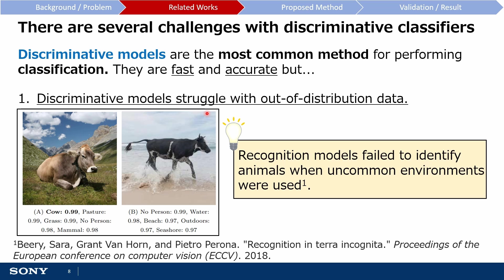Firstly, they appear to struggle with out-of-distribution data — that is, data that deviates significantly from the data used to train the model. For example, a paper published in ECCV 2018 looked at how the performance of convolutional neural networks changes when shown images of animals in unfamiliar contexts. While the model confidently identifies the cow in a familiar setting, it can no longer identify the cow when the background is changed to a beach.